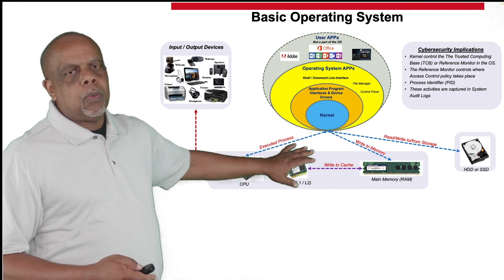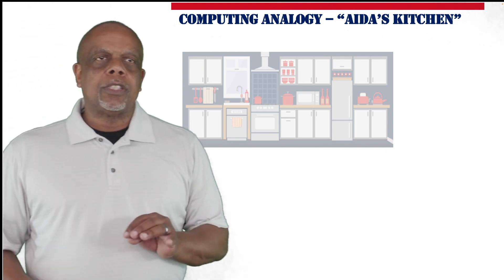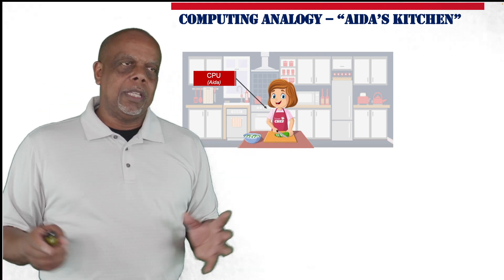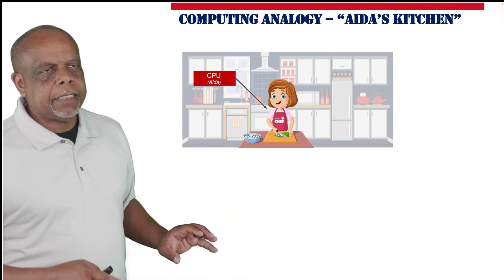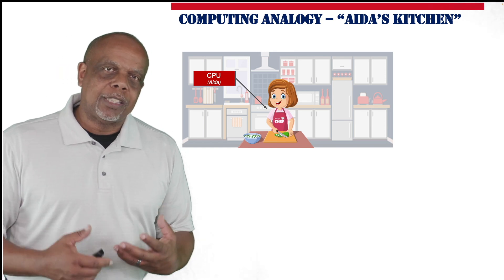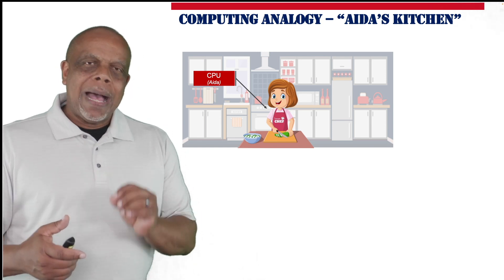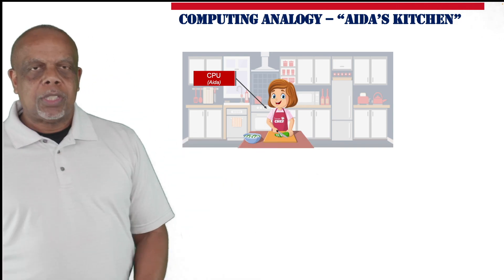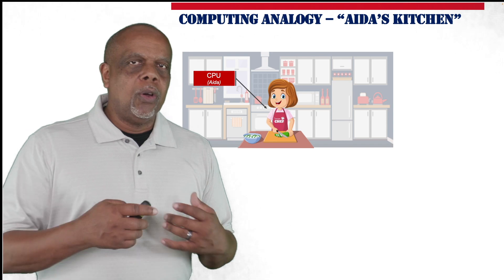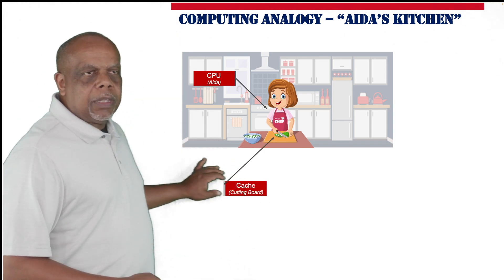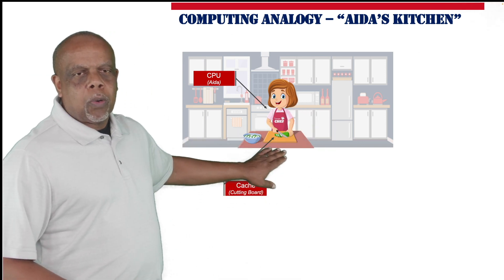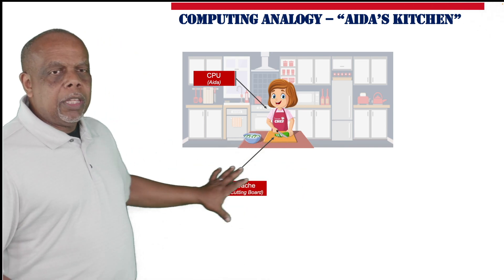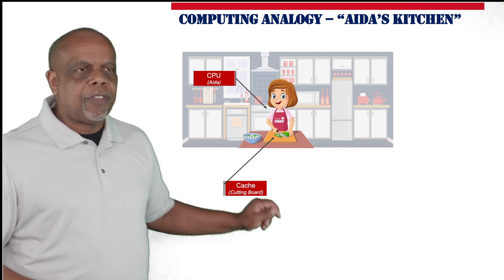I like to use an analogy for how an operating system works — I call it Ada's kitchen. Ada loves to cook and she's going to make a fresh garden salad. Ada is the CPU — this is where work gets done; she fetches, decodes, cuts, and slices. Her cutting board is like cache memory: this is where work is getting done, but she can only put a few things on at a time. She can slice and dice really fast though — small amount of memory, but very, very fast.